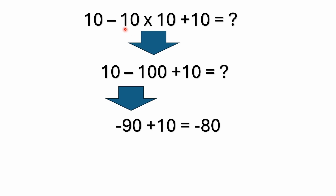We know that multiplication is going to be the first priority in this problem, so we do the multiplication first. Keep in mind the negative sign: it's 10 minus 10 times 10, plus 10. So 10 times 10 is 100, giving us 10 minus 100 plus 10. Ten minus 100 is negative 90, and negative 90 plus 10 is negative 80.